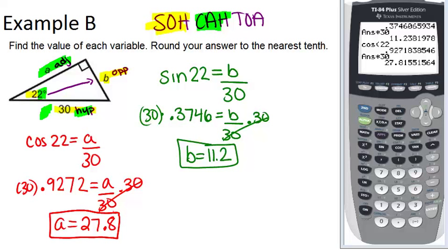Now, reality check. Both A and B should have been less than 30 because 30 is the hypotenuse, so it should always be the longest side. And it did work out that both A and B were less than 30, so that makes sense.